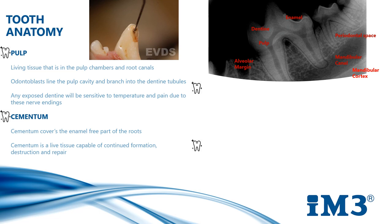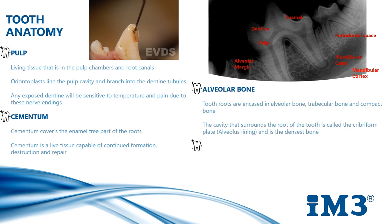Tooth roots are encased in alveolar bone, trabecular bone and compact bone. The cavity that surrounds the root of the tooth is called the cribriform plate, which is the densest bone. On x-rays it can be seen as a white line called the lamina dura. X-rays are necessary to assess any trauma that has been caused to the alveolar bone and the dental structures.